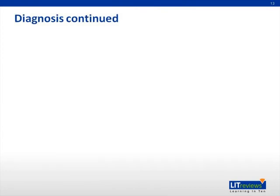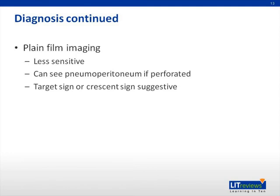Other radiological methods can be used to diagnose intussusception; however, they are not generally preferred. Plain film imaging is less sensitive than ultrasound, but it can identify pneumoperitoneum if the bowel has perforated. A target sign or crescent sign can also be visible. The target sign consists of two concentric radiolucent circles superimposed on the right kidney, representing peritoneal fat surrounding and within the intussusception. The crescent sign is a soft tissue density, namely the intussusceptive bowel loop, projecting into the gas of the large bowel.